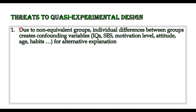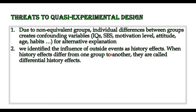Because there is no random assignment, the groups are non-equivalent. Due to these non-equivalent groups, there are individual differences between groups that may affect our experiment. Confounding variables like IQ, socioeconomic status, motivation level, attitude, age, gender, and habits may all affect the experiment and provide alternative explanations for the result. Additionally, when two groups are involved in COSA experimental design, the influence of history cannot be ruled out. The history effect will affect both groups differently, and we may mistakenly attribute differences to the treatment when they are actually due to different history effects experienced by each group.